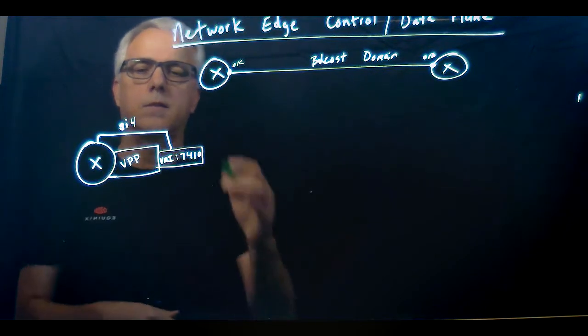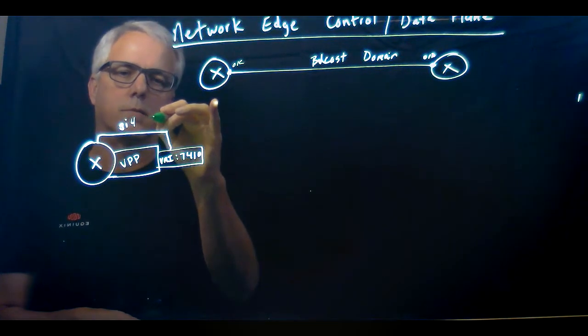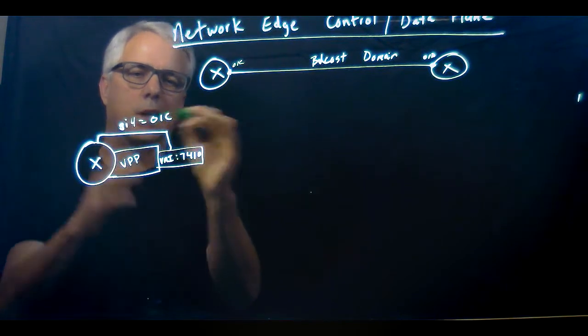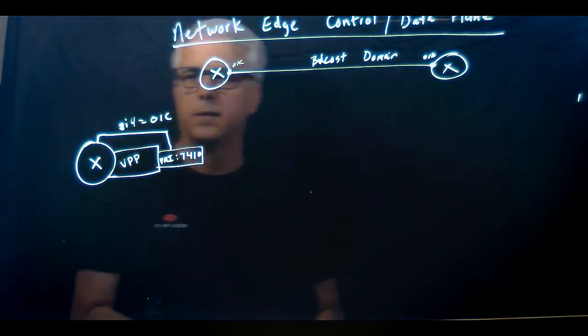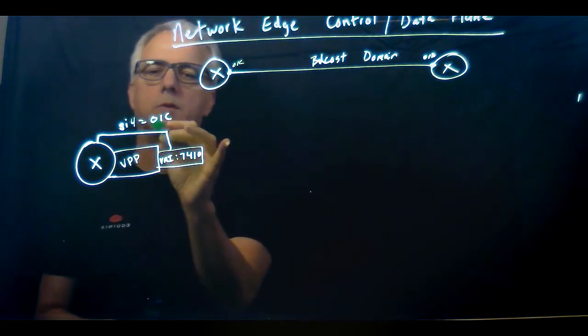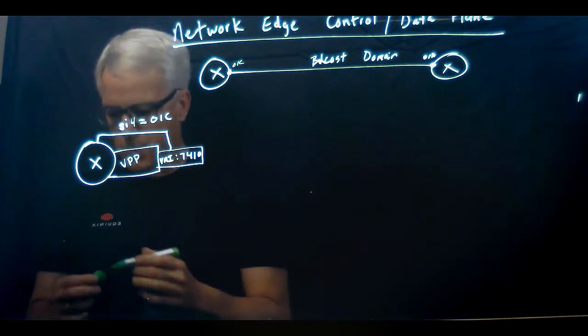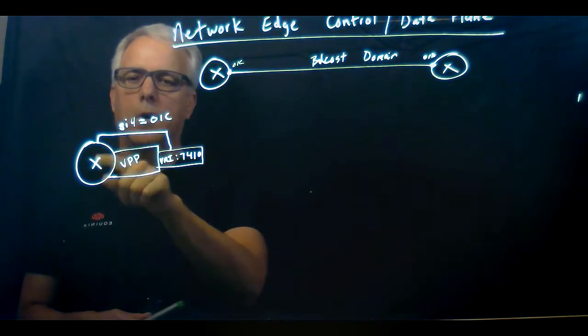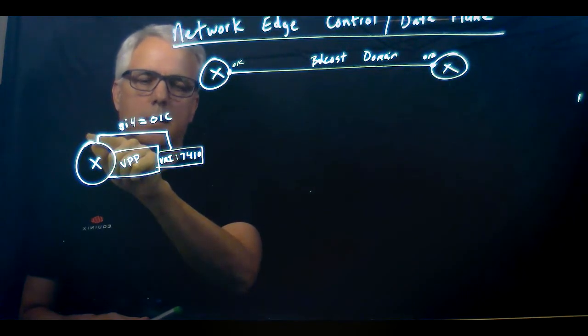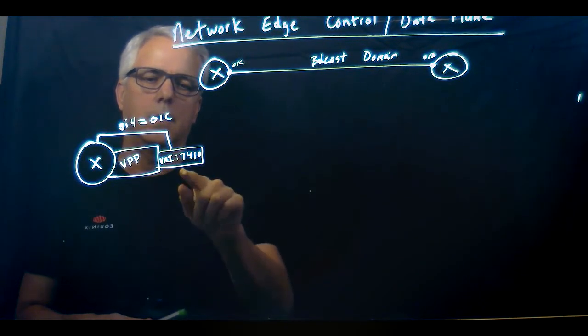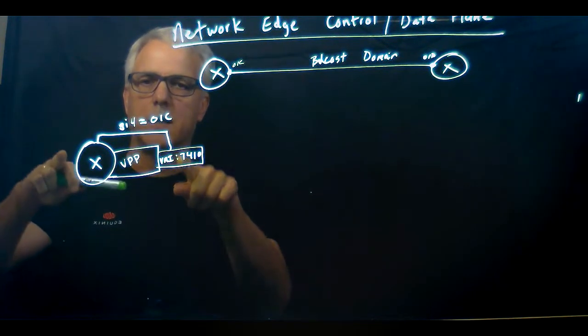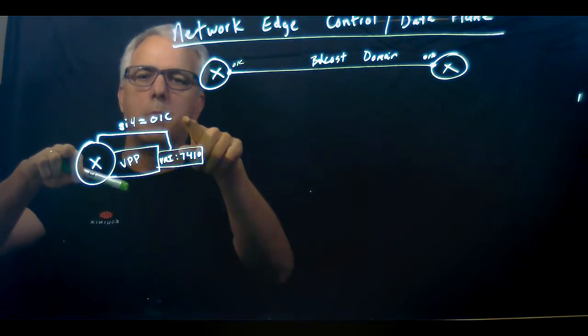This gig 4 interface also has a MAC address, so let's call that MAC address 01C. It's a lot longer than that, but we'll use the last three characters in the address. So gig 4 has MAC address 01C assigned to it, and VLAN or VXLAN network identifier 7410 is plumbed or mapped back to gig 4.